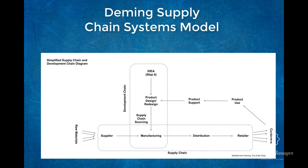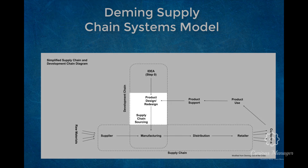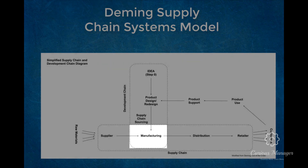Here is the Deming system model modified to reflect the role of a supply chain. When looking at the supply chain as a system, we begin with the customer wants, needs, and expectations, as noted in idea or step zero. These customer factors are then conceptualized into a product, which in turn begins the processes of designing the product and sourcing the materials required for the product to be manufactured in what we call the development chain.